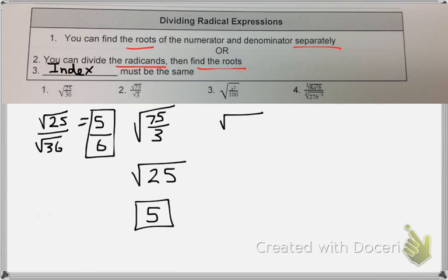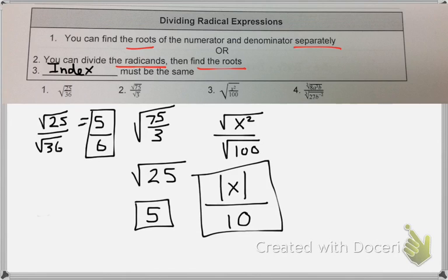For number 3, we'd want to do them separately. Square root of x squared is absolute value of x, because it's an even index. And the square root of 100 is just 10.